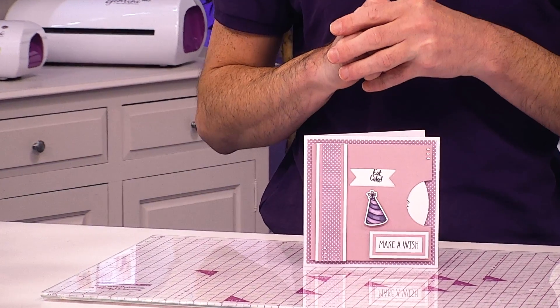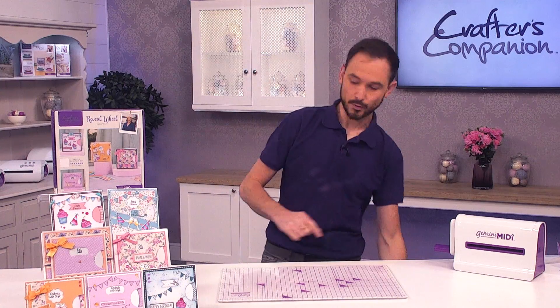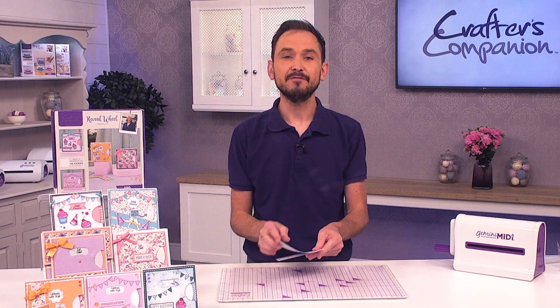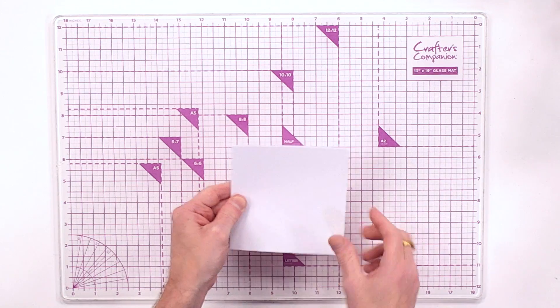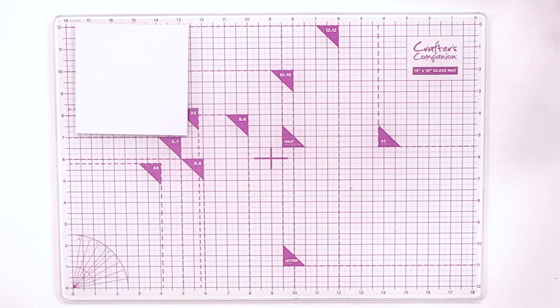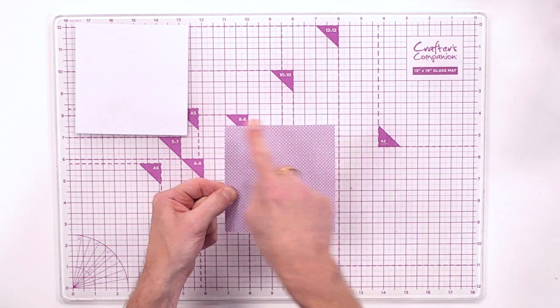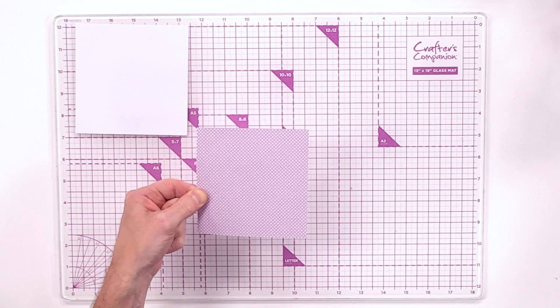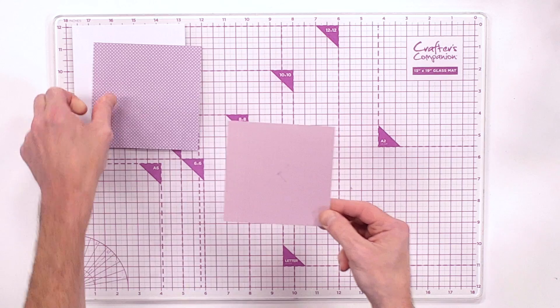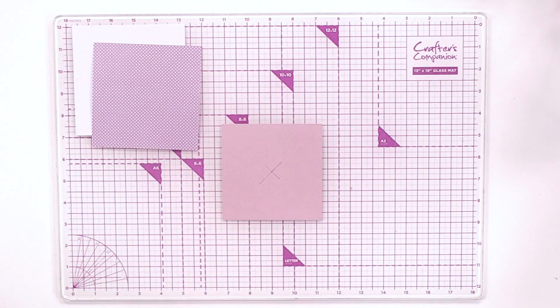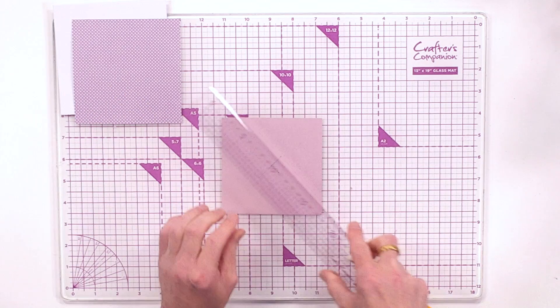Now we need to start at the beginning with the card blank. So I've taken one of the five by five card blanks that come included, and I've also taken one of the eight by eight pattern papers, cut it down to four and three quarters by four and three quarters. Then I've taken one of the color card, cut that down to four and a half by four and a half.